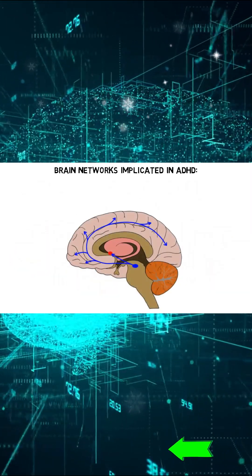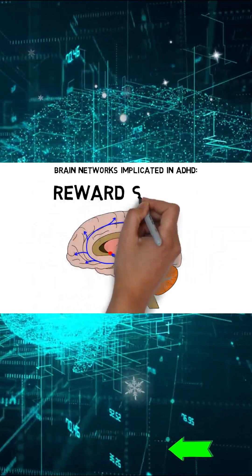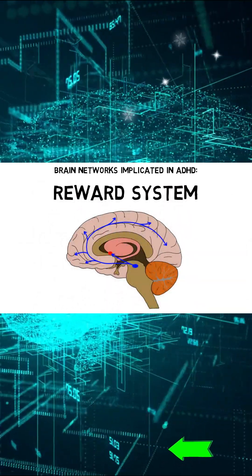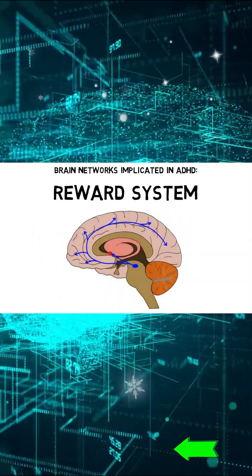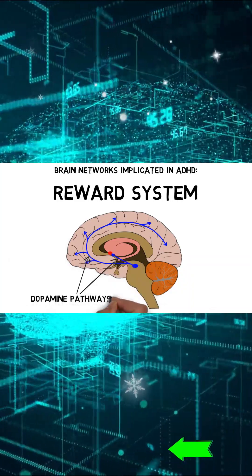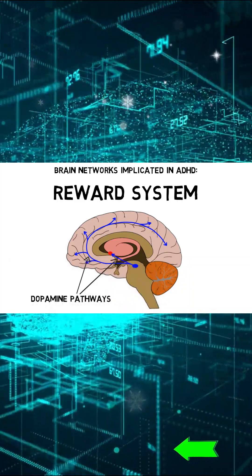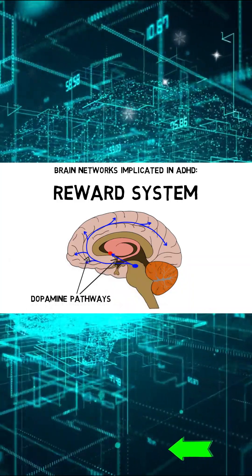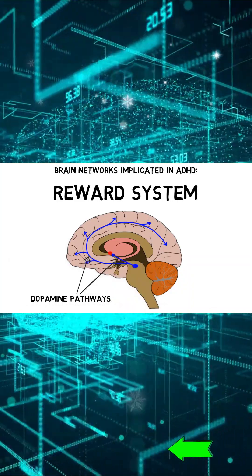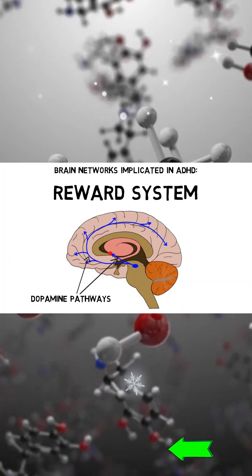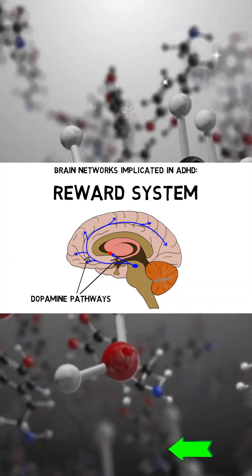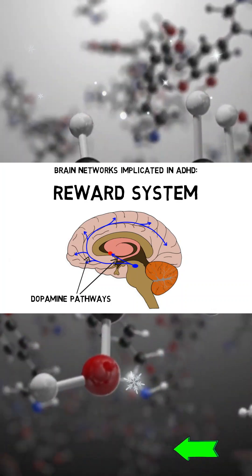Studies have also found that people with ADHD tend to display atypical activity in the reward system. The reward system includes some of the major dopamine pathways in the brain, and dopamine is often implicated in ADHD because medications that are commonly used to treat the condition, such as amphetamine and methylphenidate, cause increased transmission of dopamine and norepinephrine.